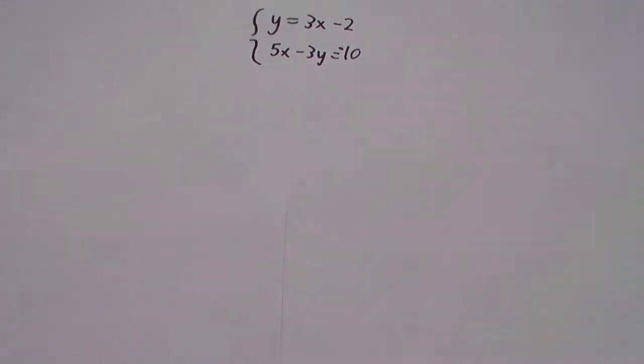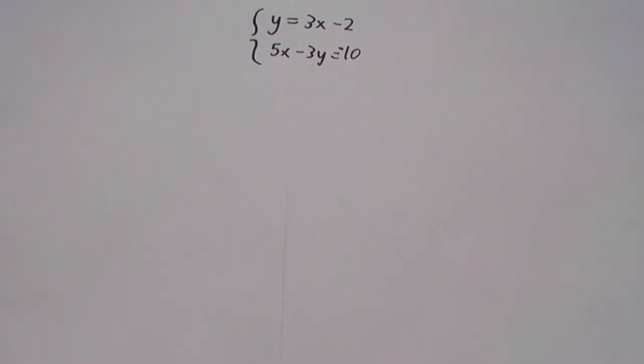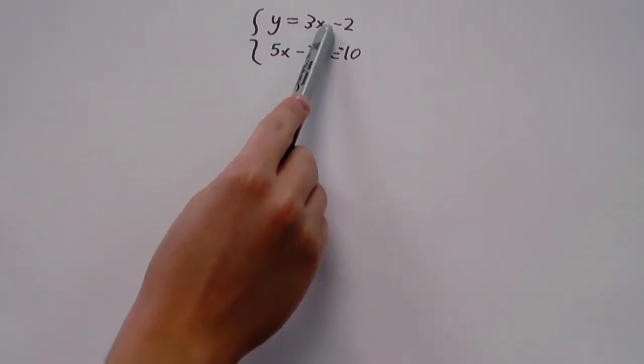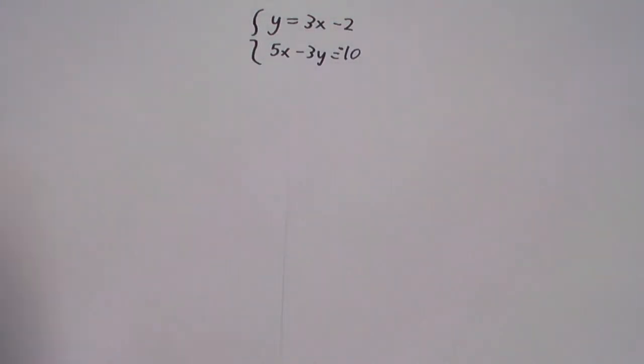Now, of course, we could make either one of these equations work with an infinite number of values for x and y. Suppose x is going to be 2, we've got y is going to be 3 times 2, which is 6, minus 2 is 4. If x is 5, y is going to be 15 minus 2, or 13.